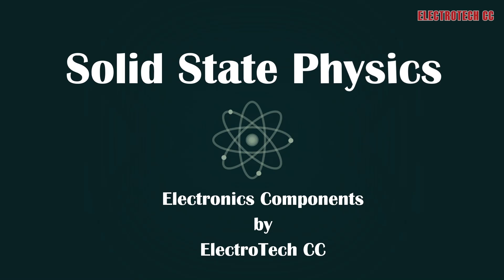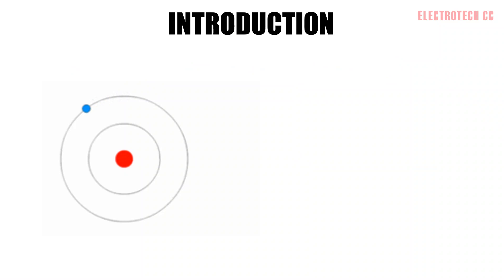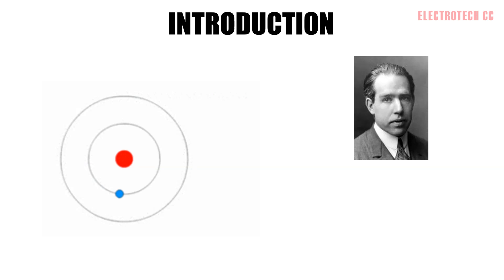Hello friends, welcome back to the lecture series of electronics components. In this video we are going to discuss solid state physics. Let's start with the atom. In 1913, the physicist Niels Bohr proposed a model in which the electrons of an atom were assumed to orbit the nucleus, but could only do so in a finite set of orbits and could jump between those orbits only in discrete changes of energy corresponding to absorption or radiation of a photon.